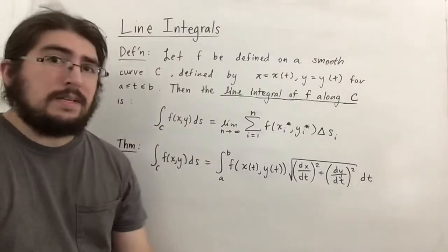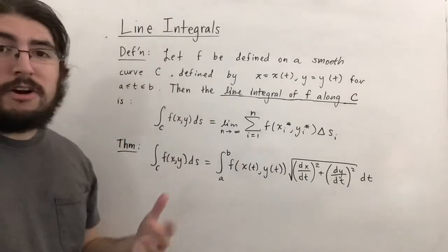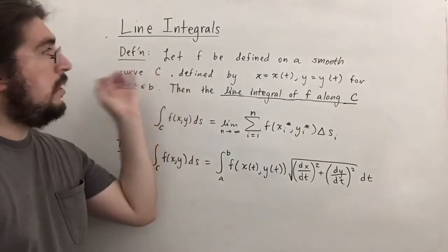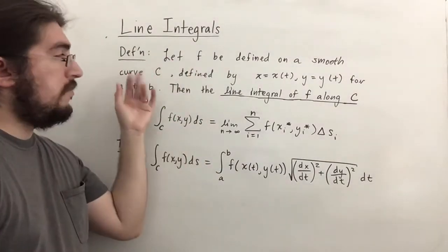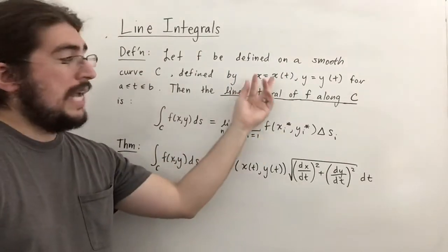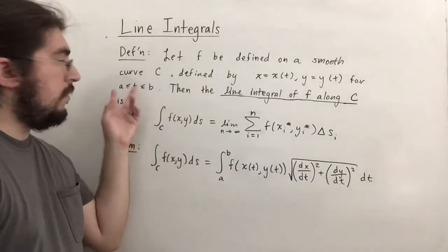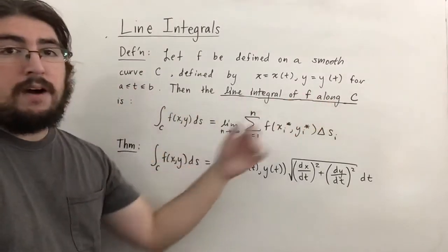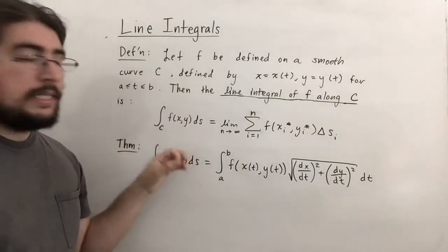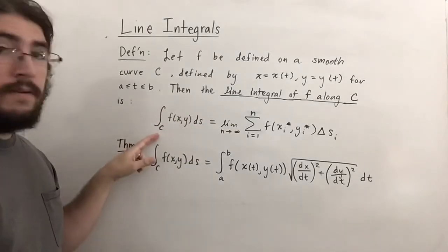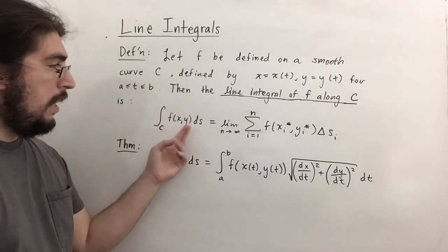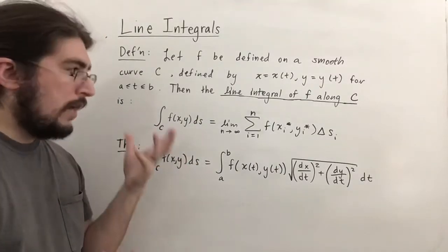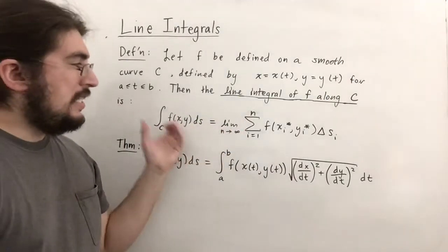Hello everyone, here we'll be discussing line integrals. Let f be defined on a smooth curve c given by parametric equations x equals x of t and y equals y of t for t between a and b. Then the line integral of f along curve segment c is written as the integral over c of f of x, y ds, where ds represents a difference in arc length.